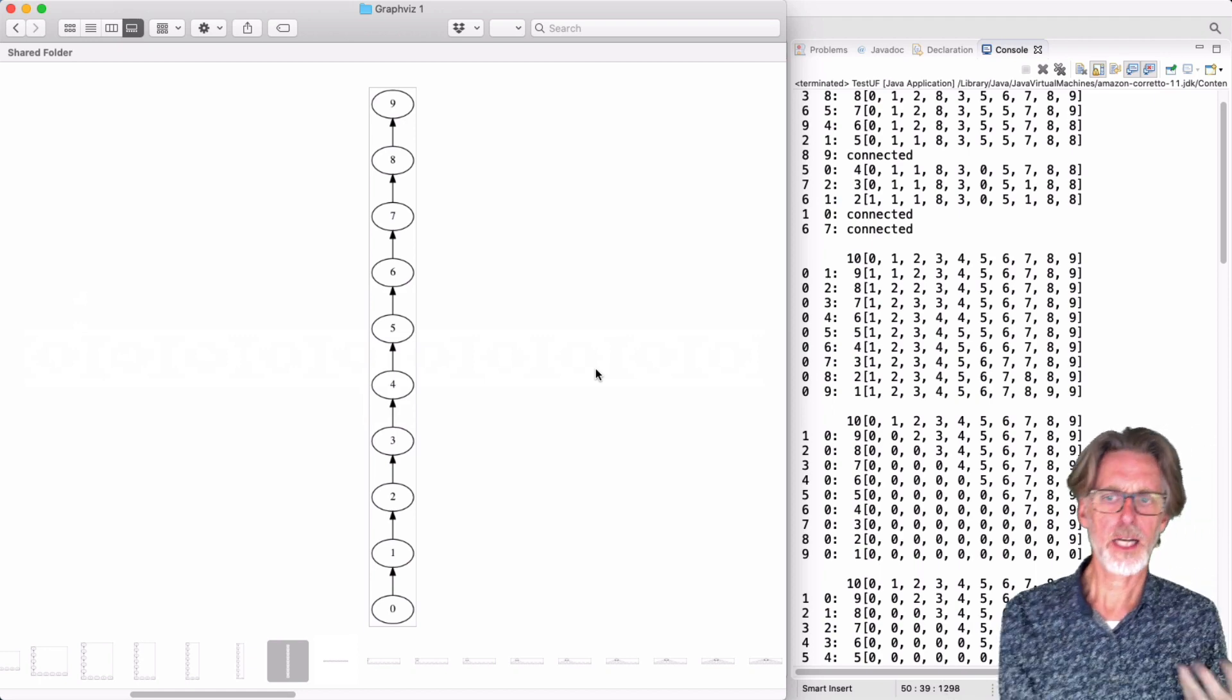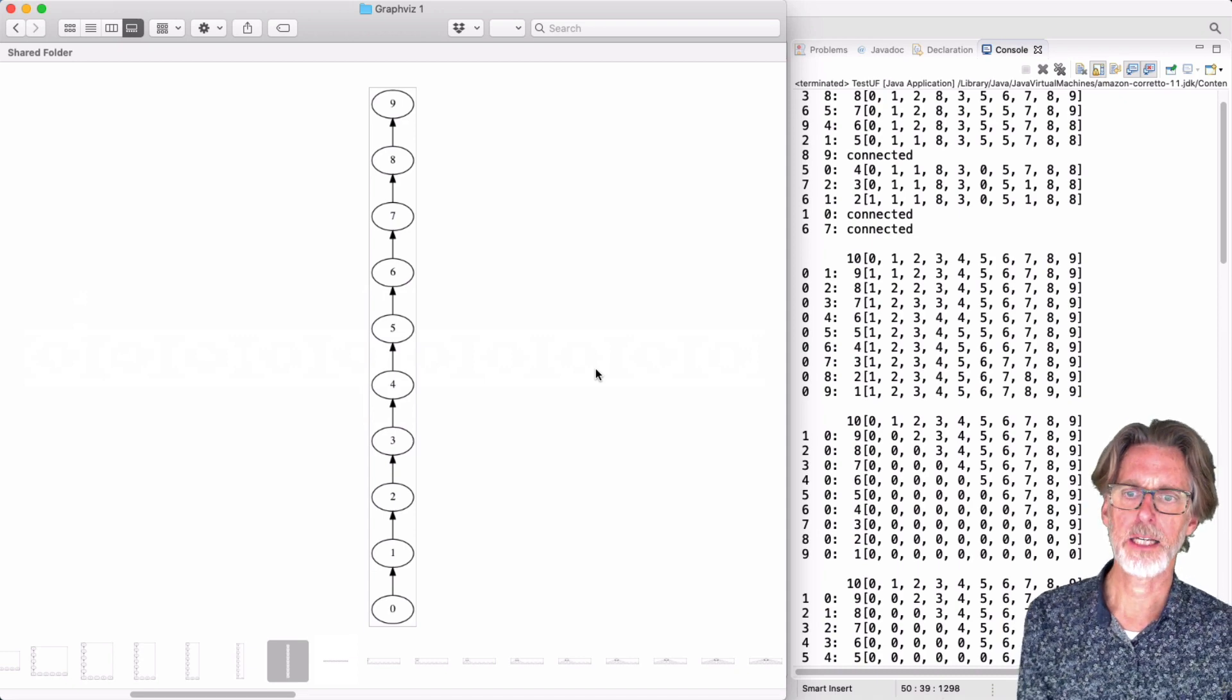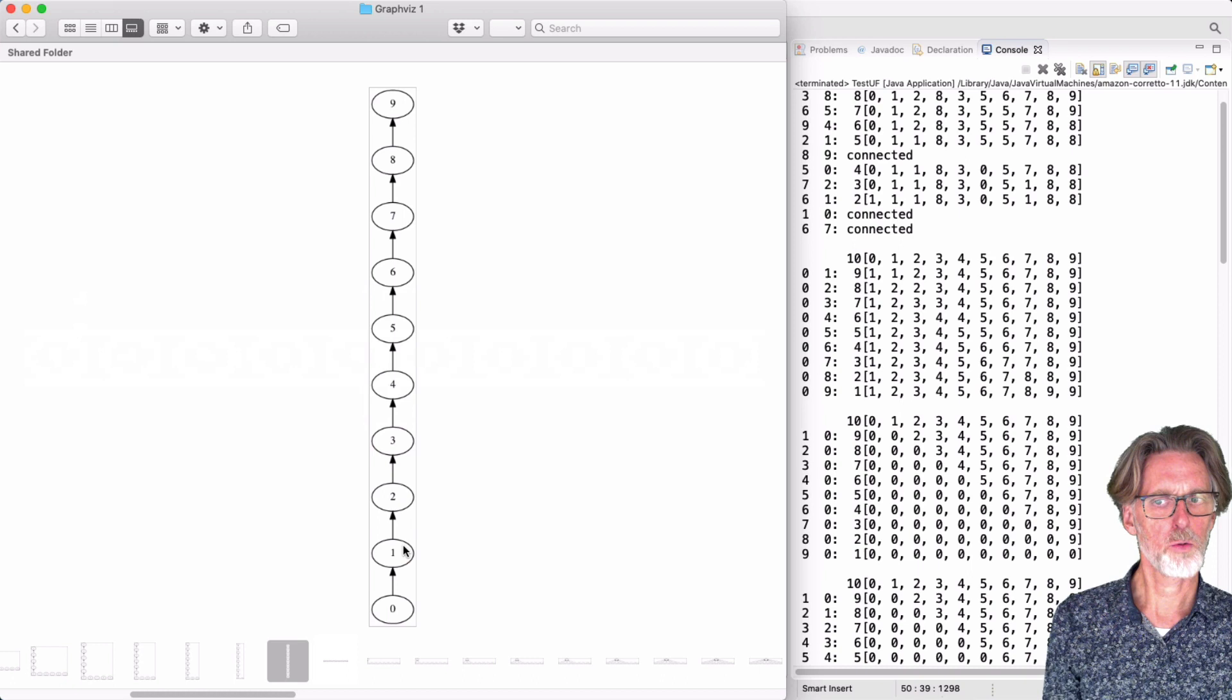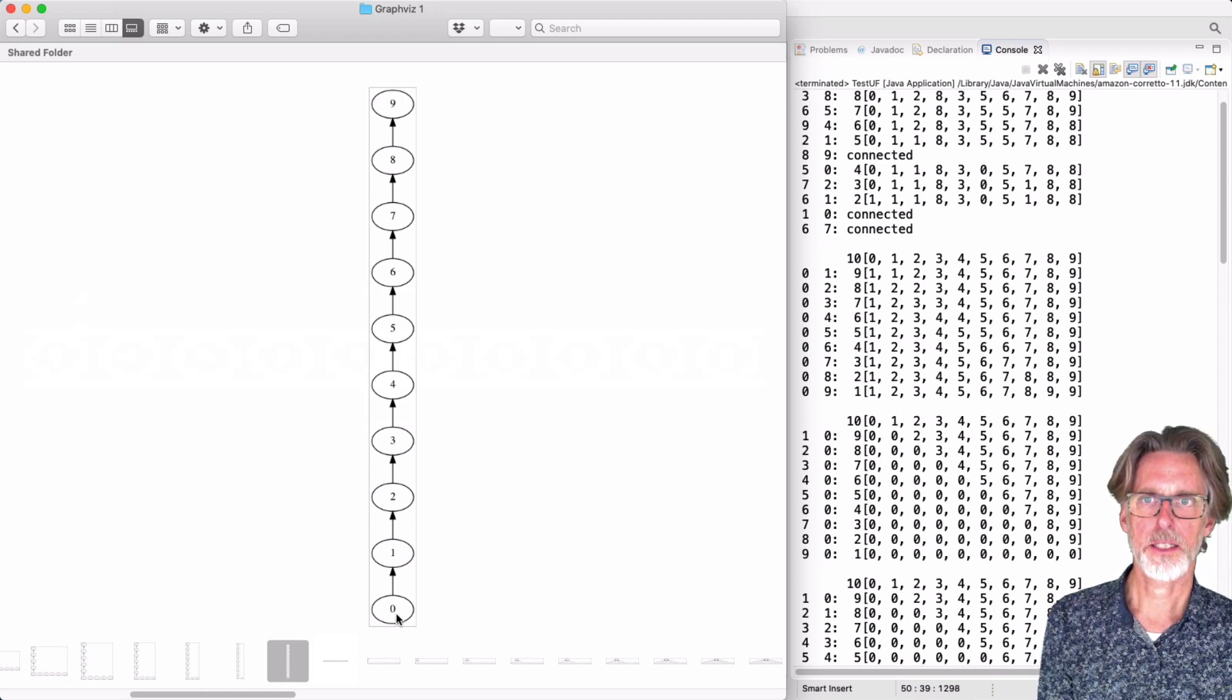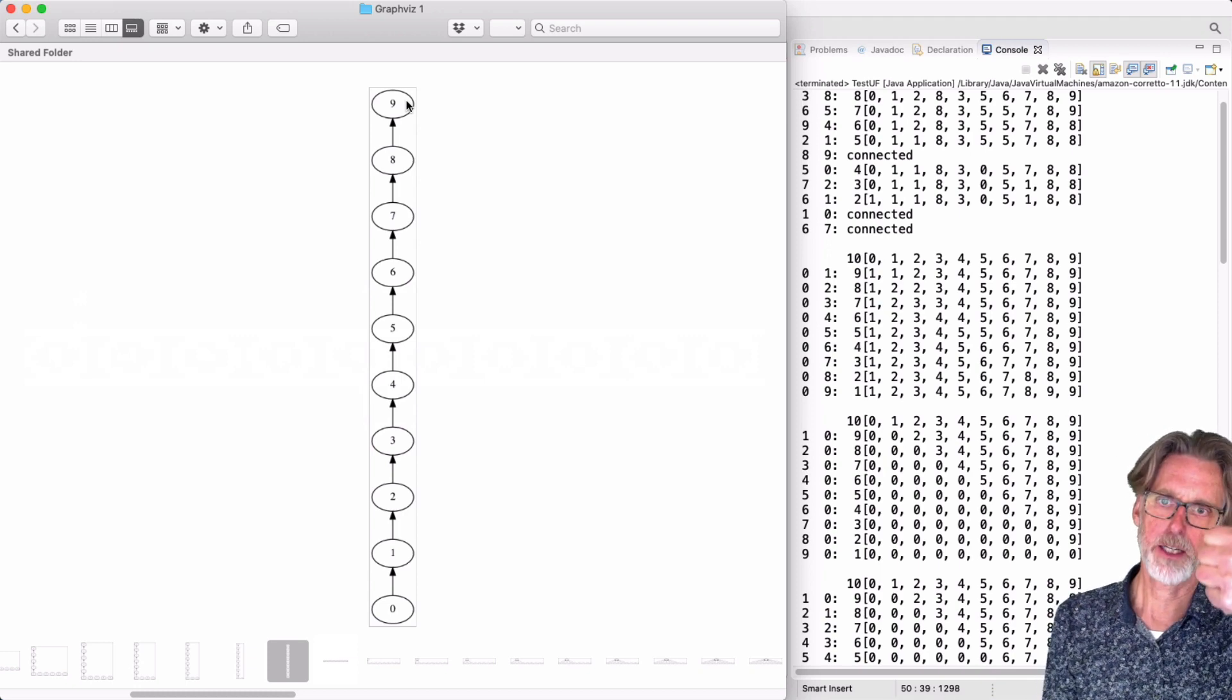And you can imagine that these are going to have really different performance when it comes to checking connectivity. So in this case, if I want to know, is 0 connected to 1, what is the algorithm going to do? It starts at 0, goes all the way up to 9. That's the idea of 0.